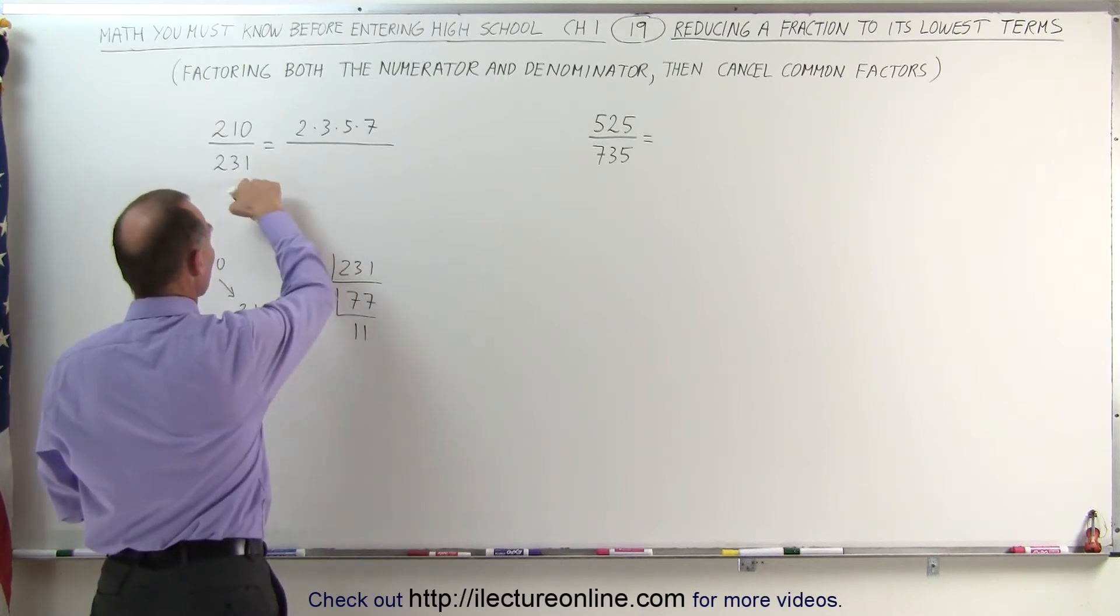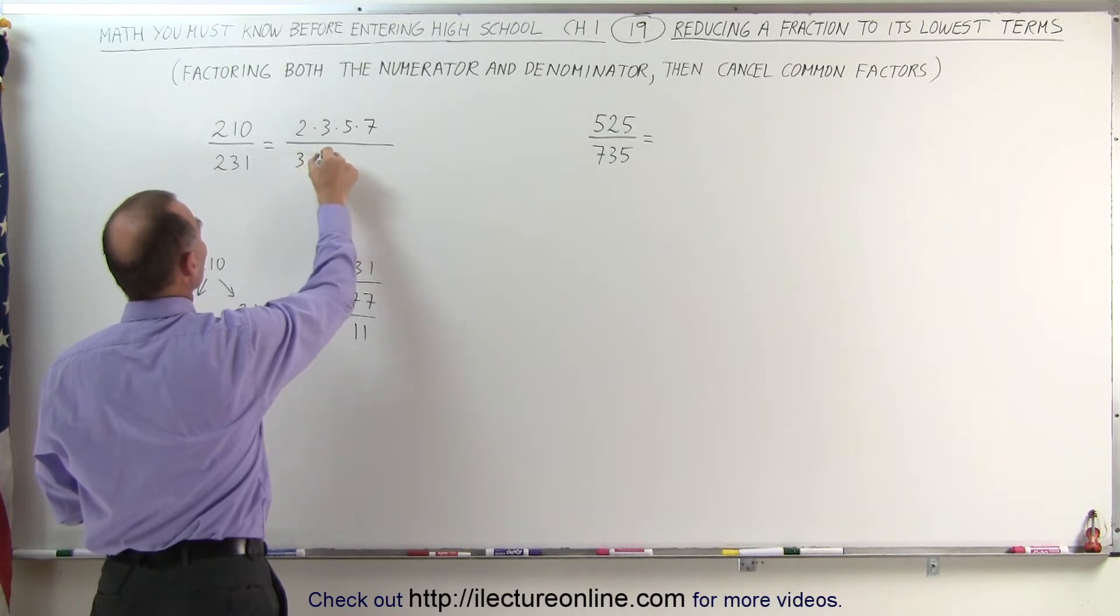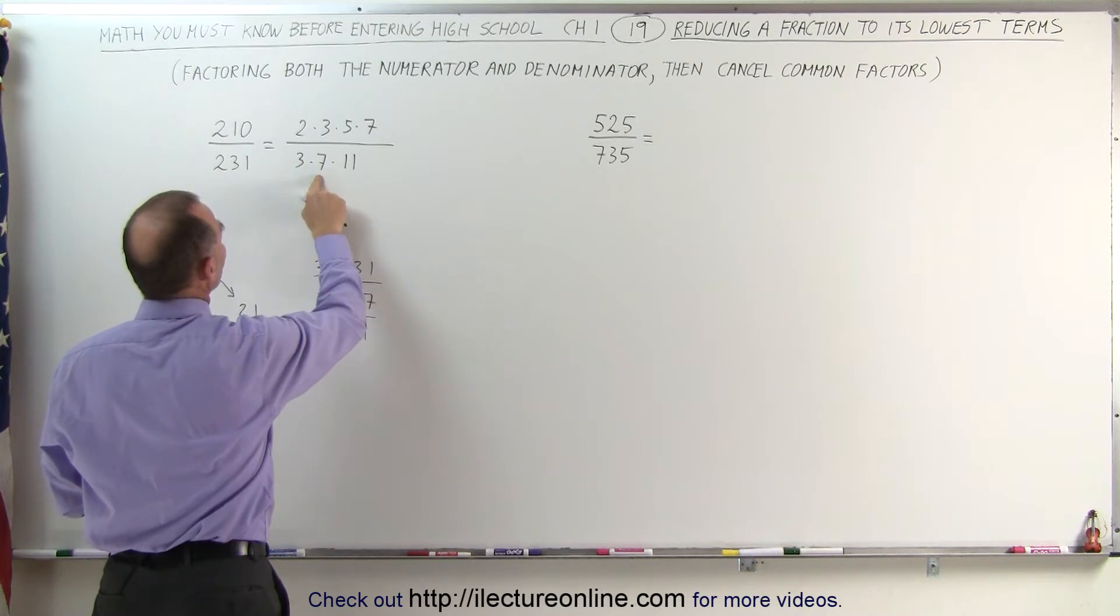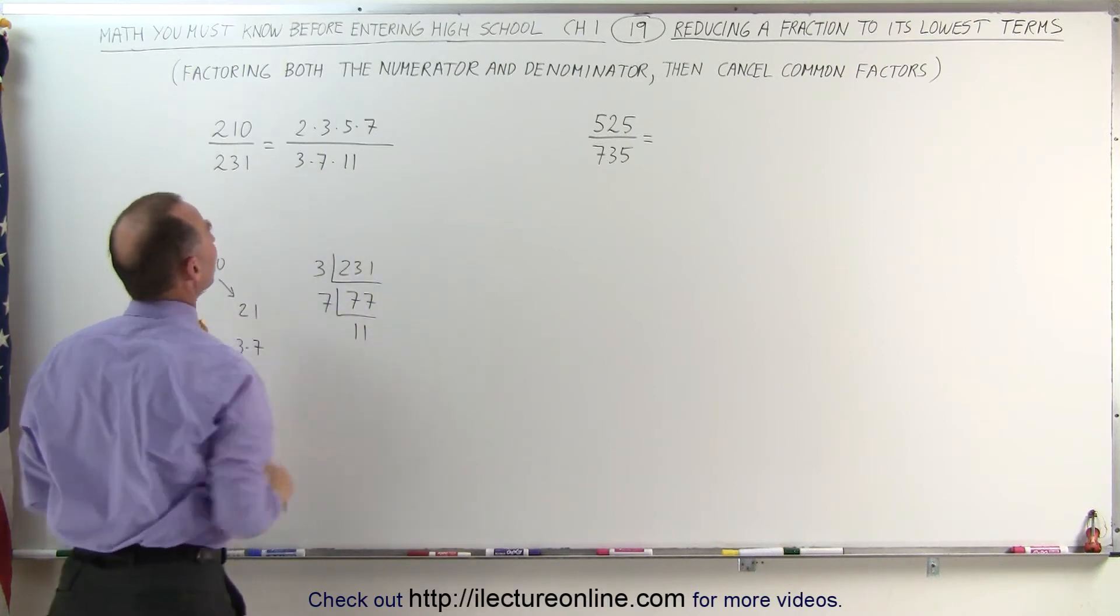Which means that 231 can be written as 3 times 7 times 11. A quick check to see if this is correct. That's 21. That's 210. Yes, that is correct.